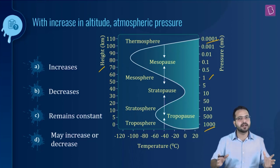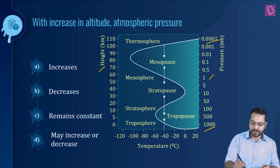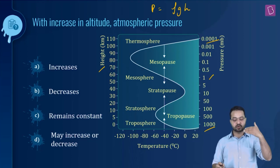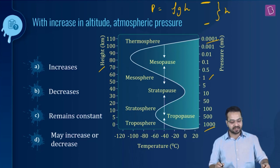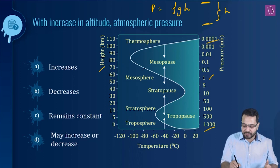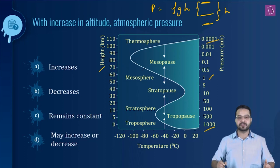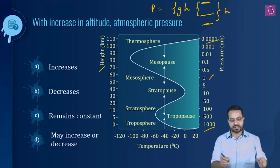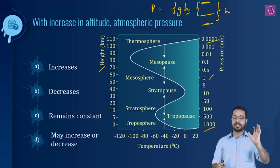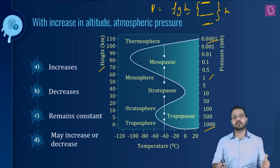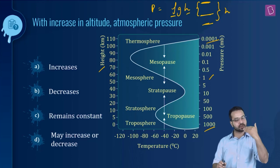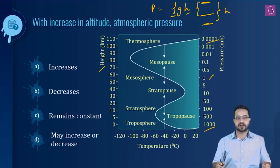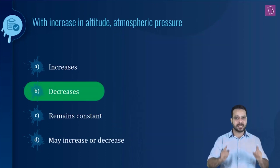We didn't really need that diagram because pressure is given by ρgh — the pressure at depth h. If we go to an altitude, the height of the air column above that point is lesser, so h is lesser and pressure is lesser. Additionally, as you go higher, the density of air reduces, lowering ρ as well. The combination of ρ lowering and h lowering reduces pressure with altitude. So the correct option is B: decreases.